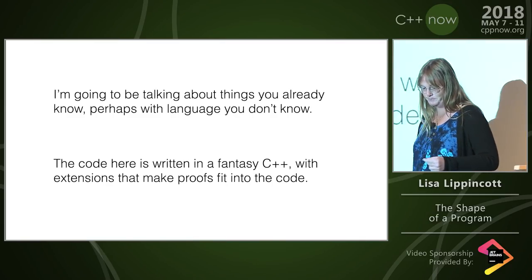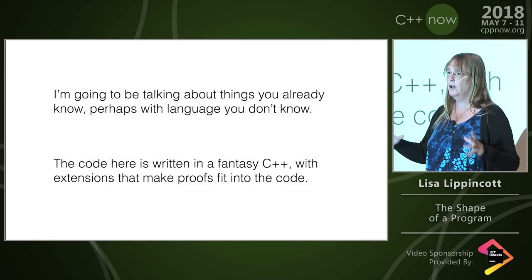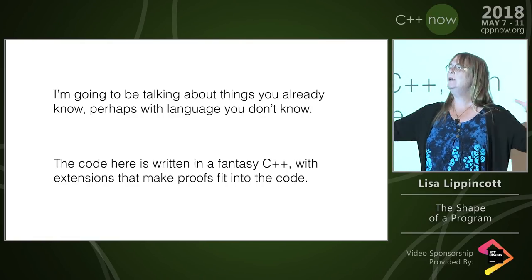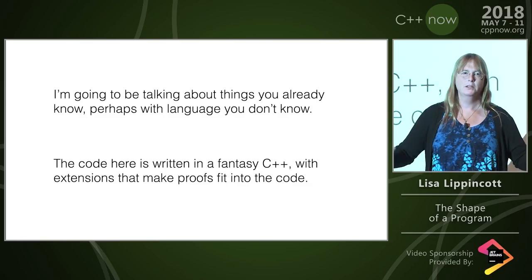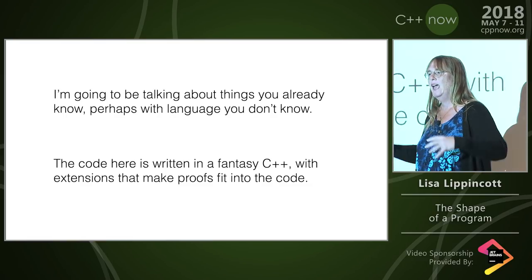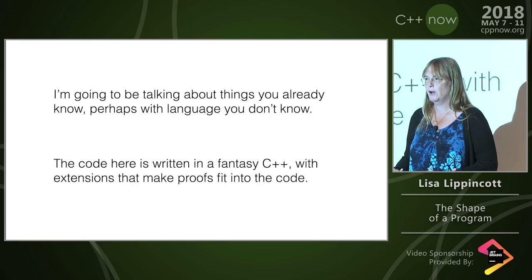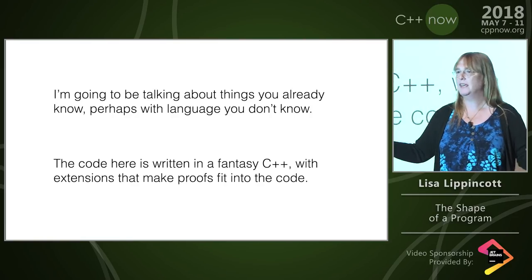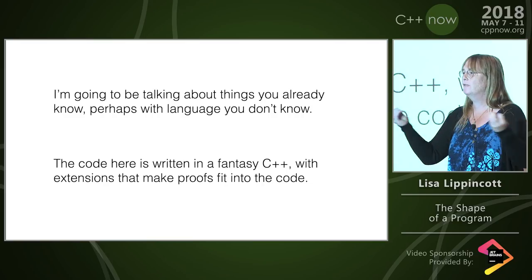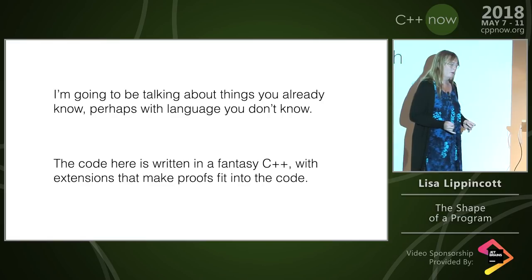With that, I want you to consider every event that happens within a program — in any run of the program, on any machine — and consider that as a shape constrained by the text of the program. The way that plumbing constrains the shape of the water in this building, and the way the events in the flow of water connect to each other.